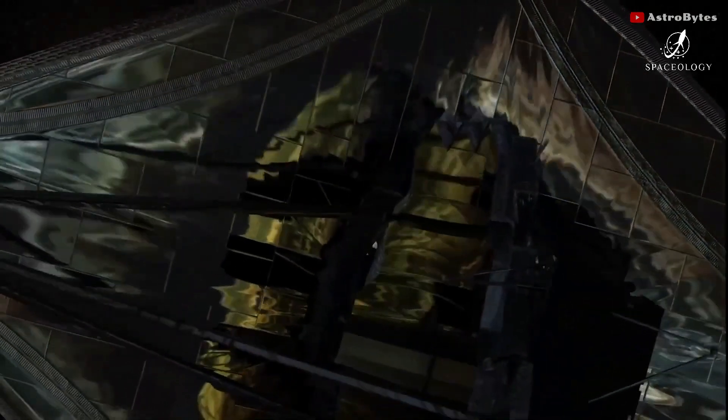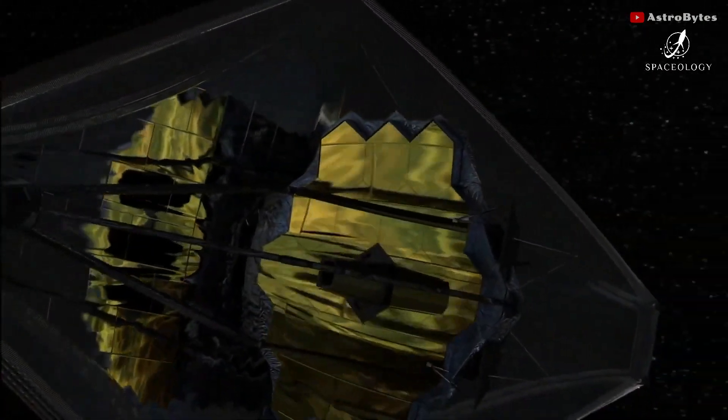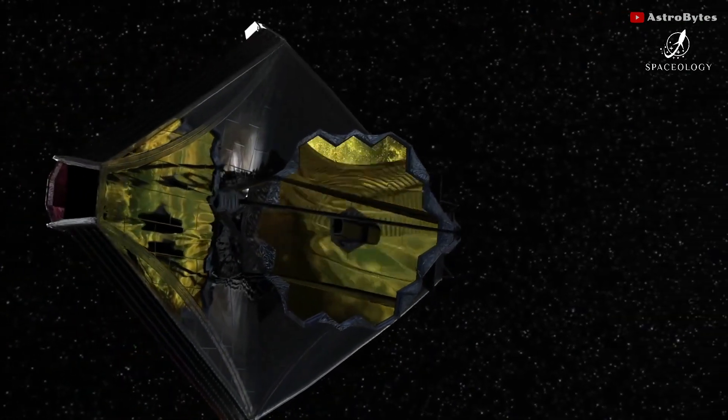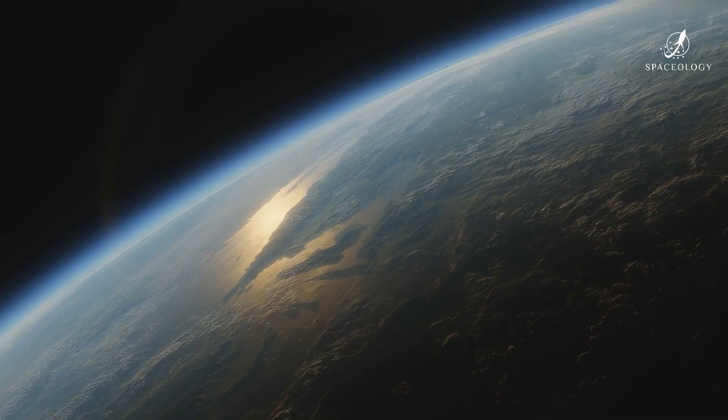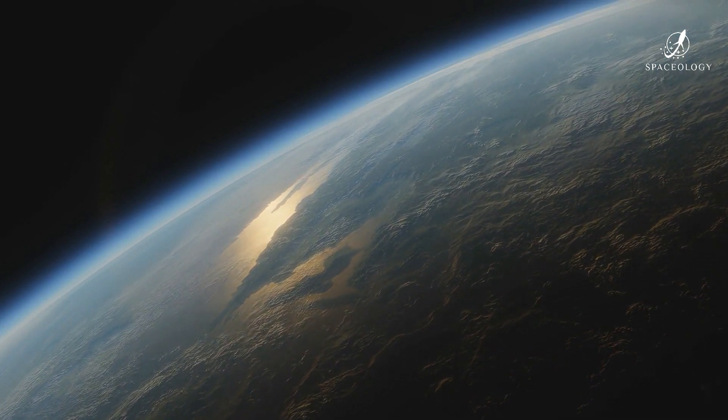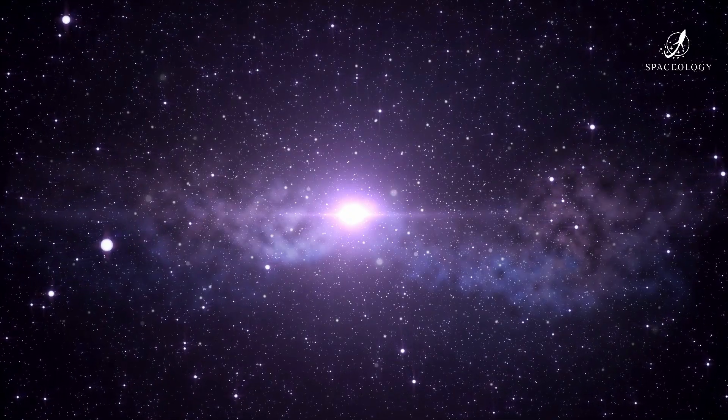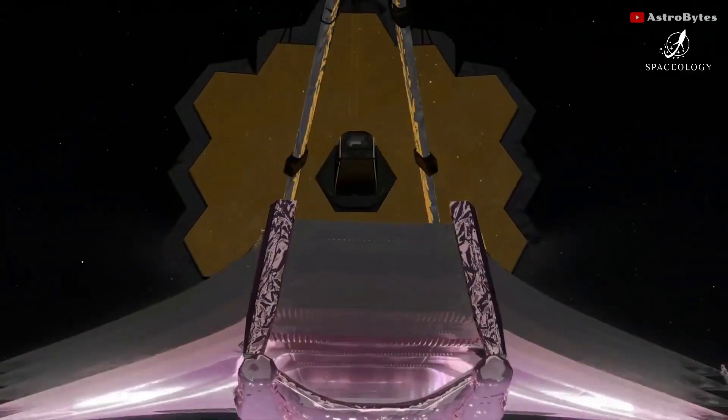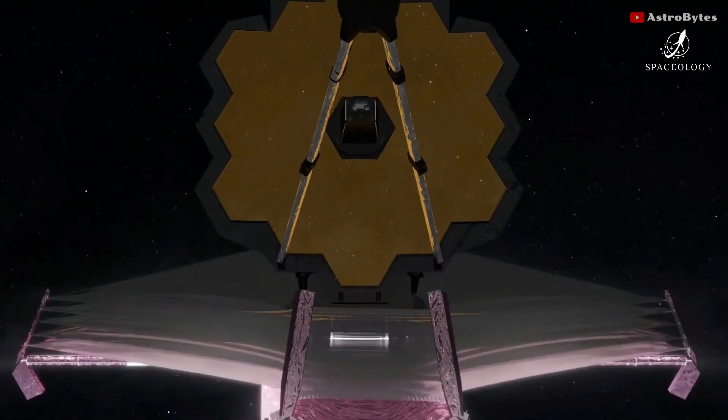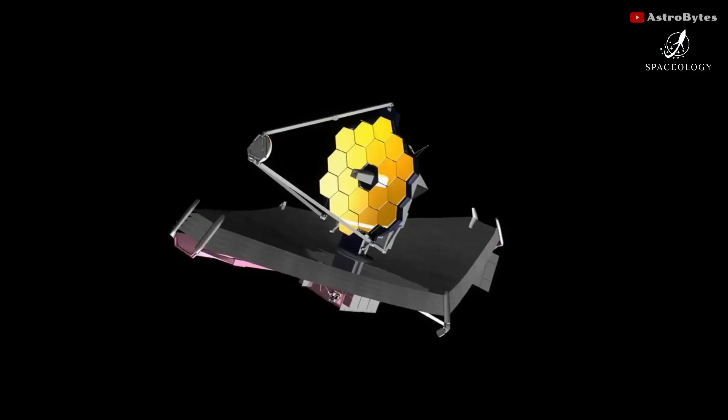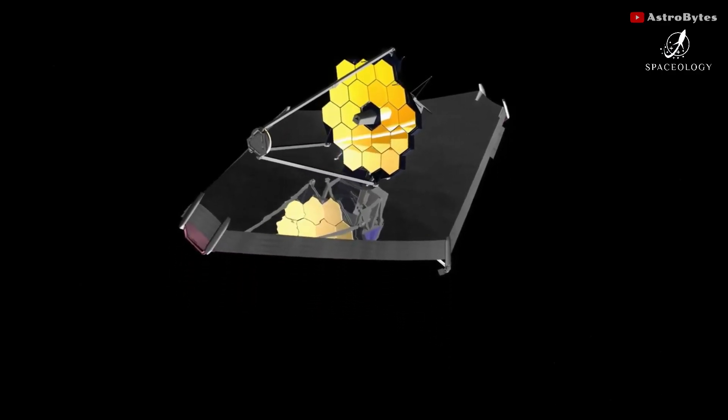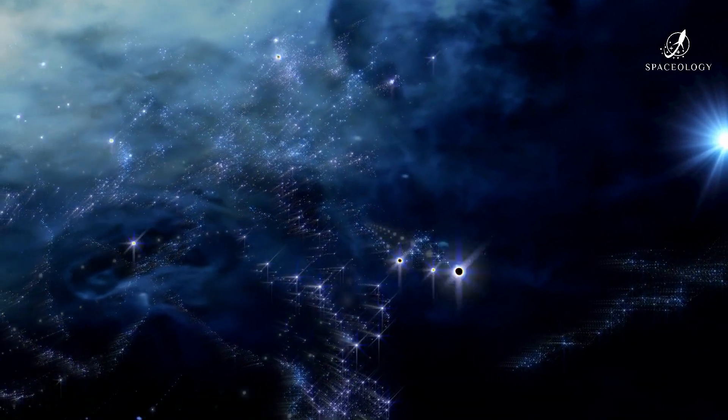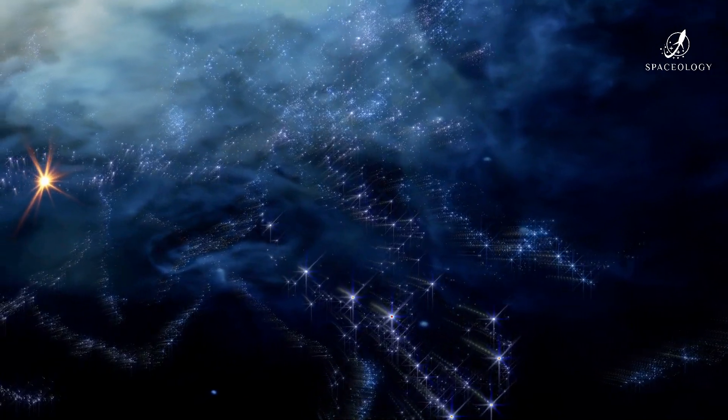NASA has reported that the James Webb Space Telescope sunshield, which is the same size as a tennis court, has been entirely installed. Webb's equipment is stored in the shade by the 70-foot kite-shaped contraption, which works as a parasol, guaranteeing that they can detect signals from the furthest reaches of the universe.